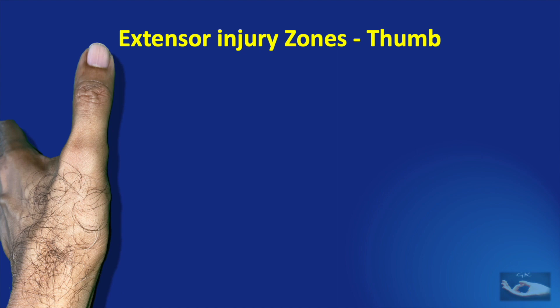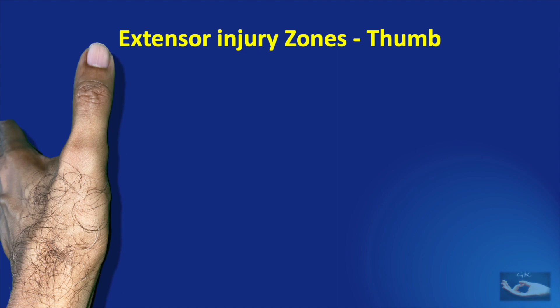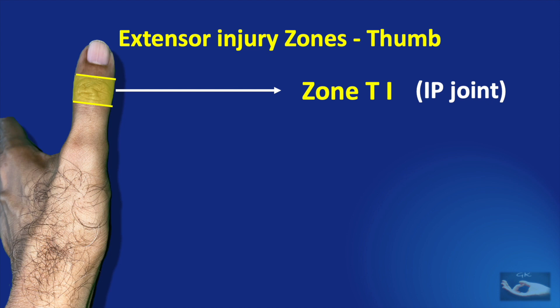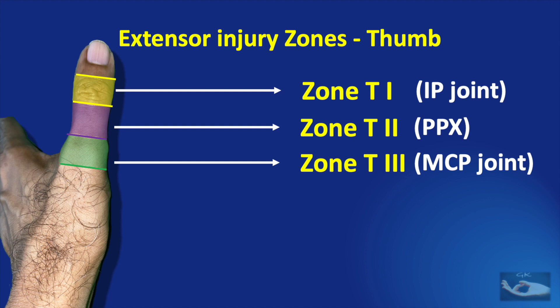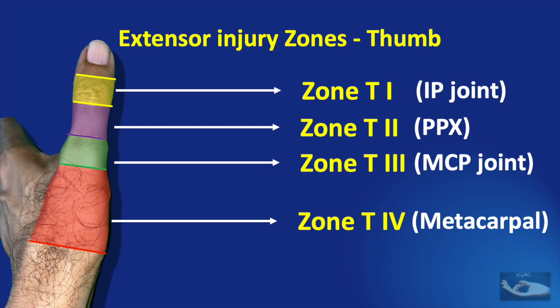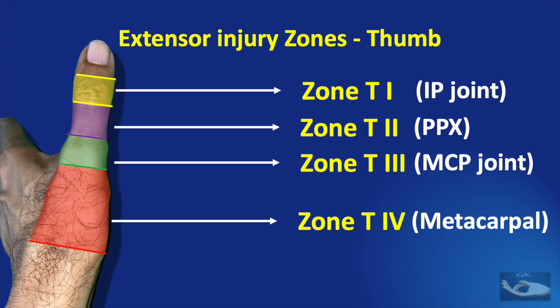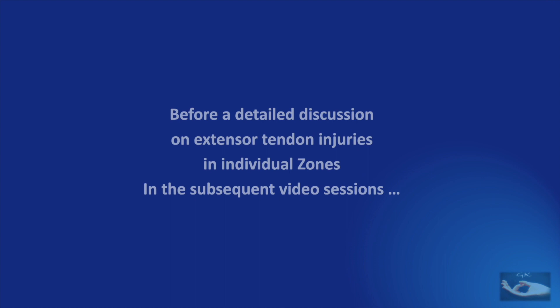Extensor injury zones have also been described for the thumb. Zone T1 represents injury to the extensor tendon on the dorsal aspect of the interphalangeal joint of the thumb. Zone T2 represents injury on the dorsal aspect of the proximal phalangeal region. Zone T3 represents injury on the dorsal aspect of the metacarpophalangeal joint of the thumb. Zone T4 represents injury at the level of the dorsum of the metacarpal bone.